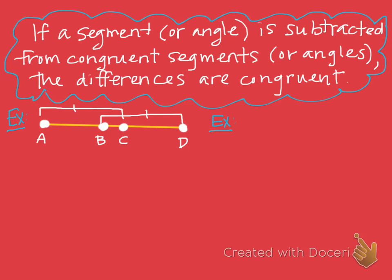Looking at this picture of a segment — similar to the philosophical chairs example but now subtracting — our congruent segments are AC and BD. They both overlap at BC. If we subtract out BC, that little part, we're left with just AB and CD. Because of this theorem, their differences are congruent: AB is congruent to segment CD. Or we can say their lengths are equal: AB equals CD.